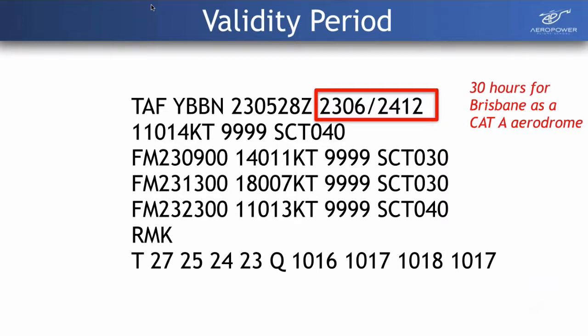The next section is the validity period — the period that this forecast is valid for. This is when we can actually use the forecast to determine what we're going to do for our flight. If our flight goes outside that period, we need to get another forecast valid for our flight. In this case it spans a day: it starts on the 23rd at 0600 hours and goes through to the 24th at 1200 hours — a 30-hour period, because this is Brisbane Airport.